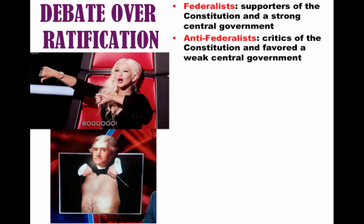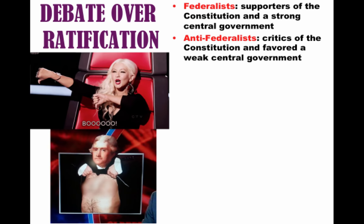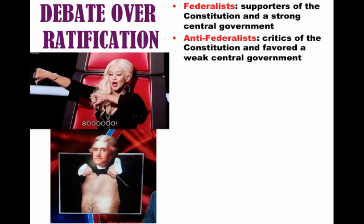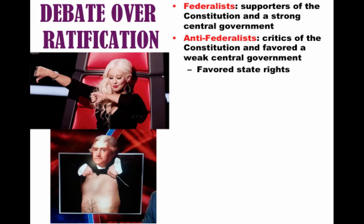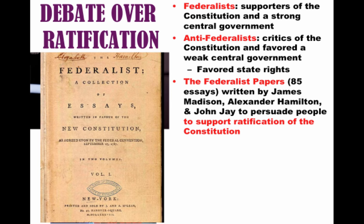On the other end were the Anti-Federalists — people like Thomas Jefferson, even though he was over in Europe. These were the critics of the Constitution who favored a weak central government. Yes, there were flaws with the Articles of Confederation, but this new government was in their mind giving too much power to the central government. Anti-Federalists were very much opposed to ratification and tended to favor states' rights.